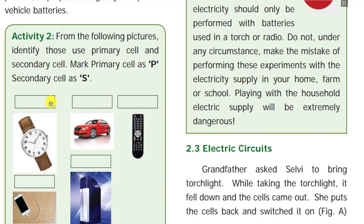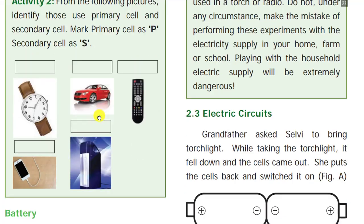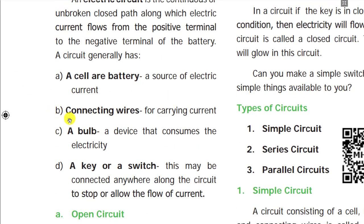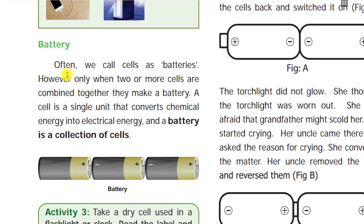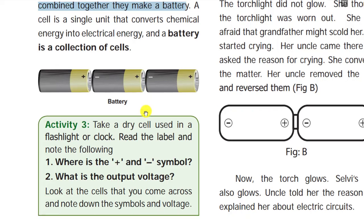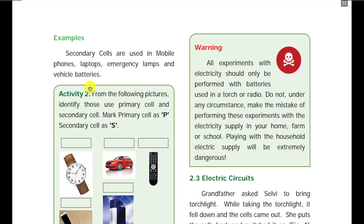Here they give some examples — you can find out which is a primary cell (mark P) and which is a secondary cell (mark S). What we commonly call a 'battery' in everyday speech — like remote cells — is actually just a cell. A battery is technically a collection of cells. Every cell has a positive terminal and a negative terminal.